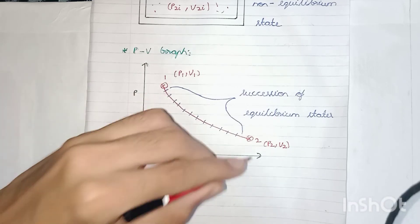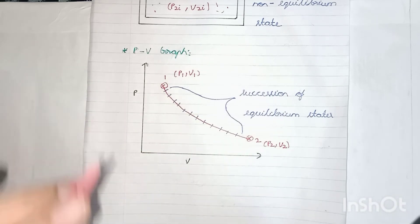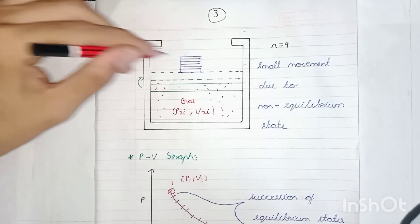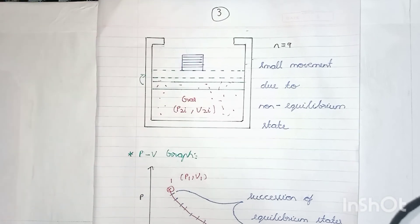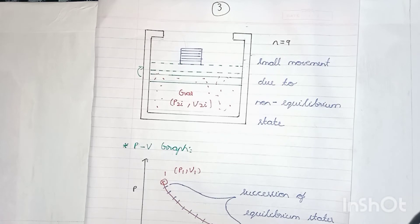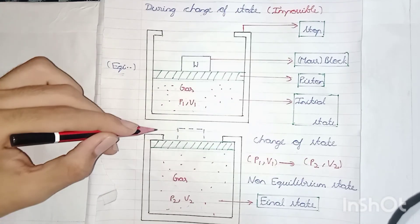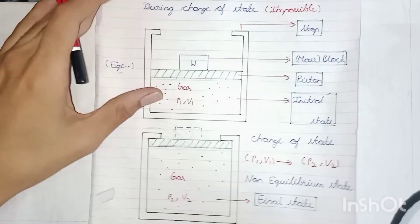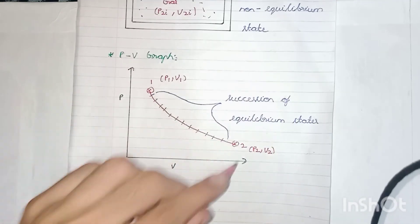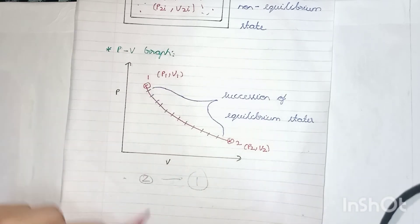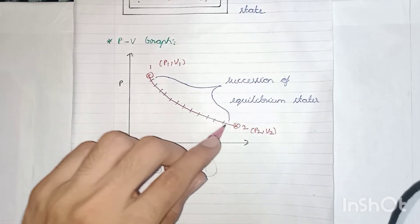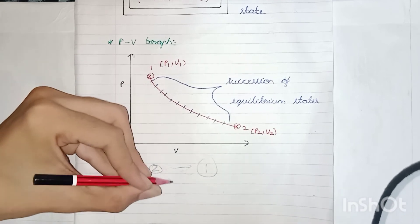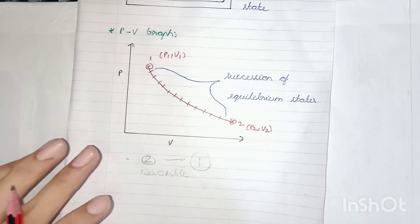One more advantage of the quasi-static process: this process is reversible — and also it is impossible, always keep that in mind. It is reversible because if you place each small piece of mass back one by one, the graph moves from the final state back to the initial state, from two to one. So this process is also called a reversible process.